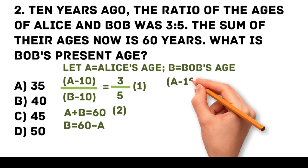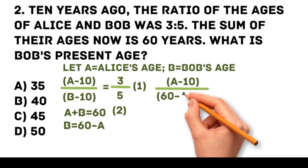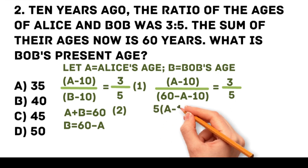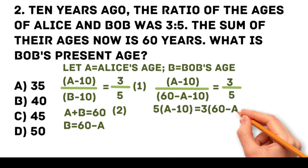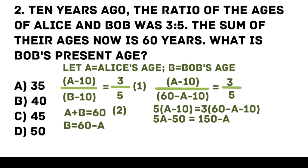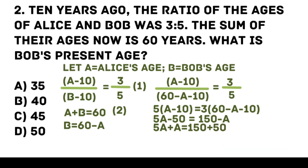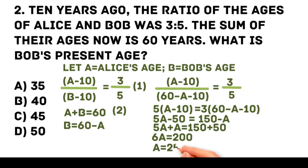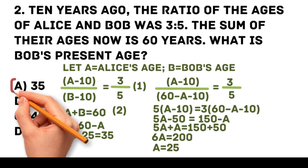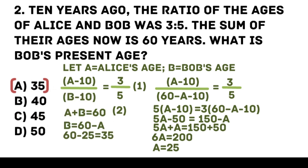Substitute b into the ratio equation: (a minus 10) over (60 minus a minus 10) equals 3/5. Cross multiply: 5a minus 50 equals 3 times (50 minus a), giving 5a minus 50 equals 150 minus 3a. Combining like terms: 6a equals 200, so a equals 25. Bob's age is 60 minus 25, which equals 35. The answer is a.